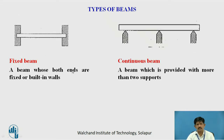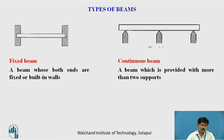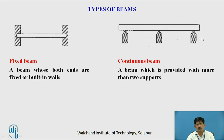A fixed beam is a beam whose both ends are fixed or built into walls. Here you can observe both ends are rigidly fixed in the walls. A continuous beam is a beam which is provided with more than two supports — it may be two, three, four, or five supports.